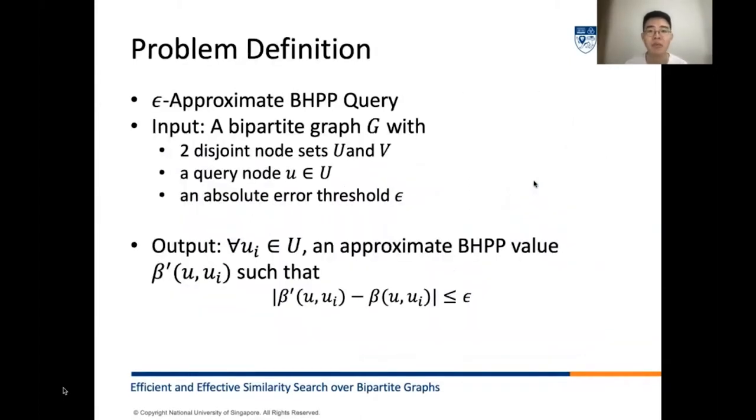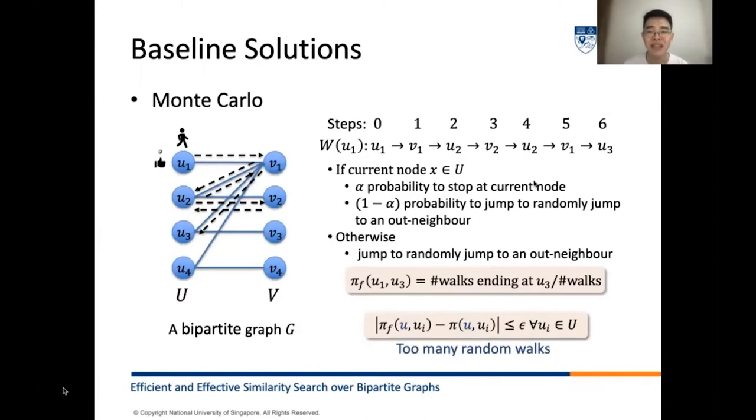Next, let us define the problem referred to as epsilon-approximate BHPP query. More precisely given a bipartite graph G with two disjoint node sets U and V, a query node u in node set U, and an absolute error epsilon. Epsilon-approximate BHPP query aims to return an approximate BHPP, satisfying at most epsilon-absolute error in it for each node in the node set U. In the following, I will introduce several basic techniques to address this problem and then analyze their limitations.